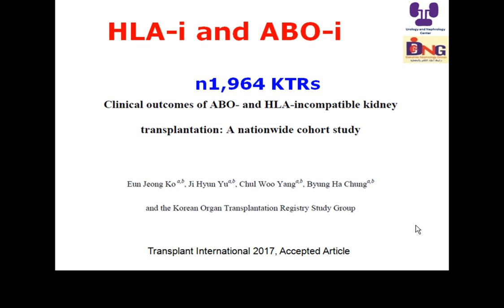Incompatibility may be in HLA typing or in the ABO system. In living donor kidney transplantation, we accept typical blood group O as universal donor, and AB as universal recipient. ABO incompatibility — such as giving a blood group A recipient a kidney from a blood group B donor — is very difficult. In the presence of donor-specific antibodies against HLA antigens or antibodies against the ABO system, desensitization is needed to proceed successfully with kidney transplantation.